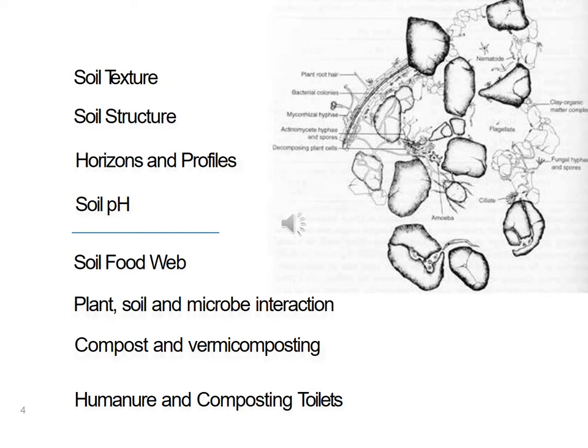A healthy soil will have nice layers or horizons. A profile would show a nice, rich, dark topsoil, and underneath that usually a lighter subsoil. pH is important too — you need the proper acidity, alkalinity, or neutrality to properly support plants. Usually around 5.5 to 6.5 pH is good for most garden and landscape plants. At that more neutral pH, most plant nutrients are available. If soil gets too acidic or too alkaline, those pH properties will bind up nutrients and make them unavailable to the plant.